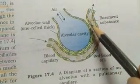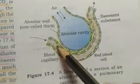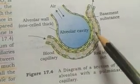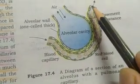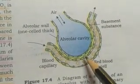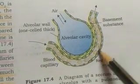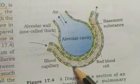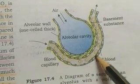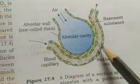Capillaries are very fine blood vessels — very fine, narrow, and are one cell thick. So you can see that one cell thick means only one cell. And inside this blood vessel is the RBC.